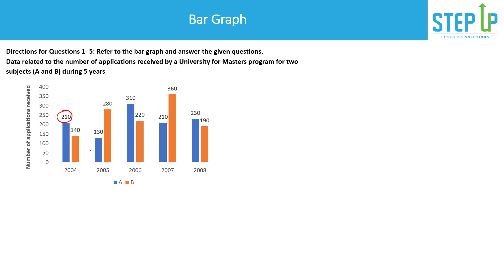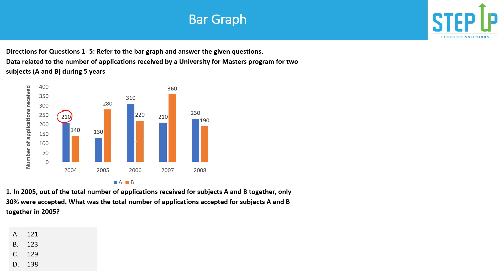In 2005, compared to 2004, the number of applications for subject A came down from 210 to 130, whereas the applications for subject B increased from 140 to 280. This is easy to understand. I would urge you to pause the video here and attempt on your own so you start feeling confident, since this is now the fourth video on DI.